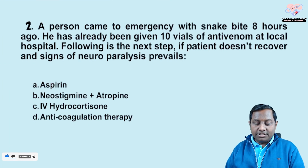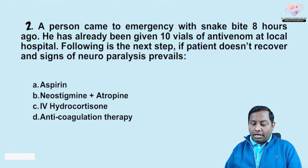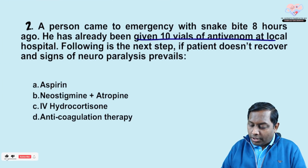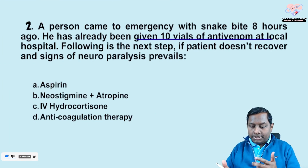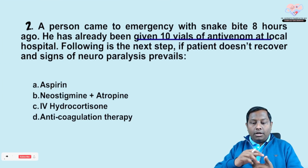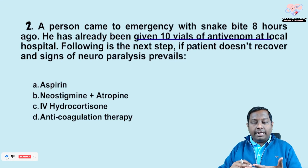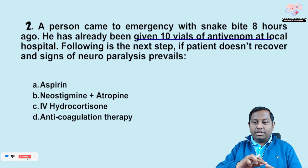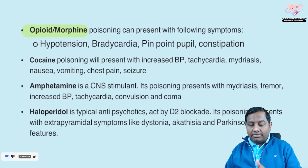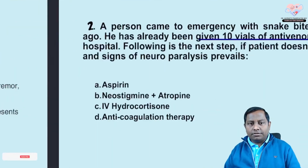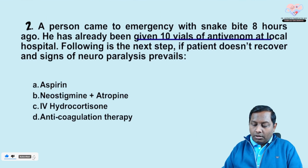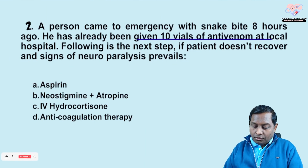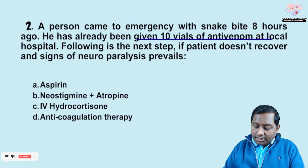Next question: a person comes to the emergency with a snake bite eight hours ago, and has already been given 10 vials of antivenom. Remember, we are also revising important topics — opioid, organophosphate, and atropine poisoning are always asked. Now they are asking about an antivenom case: what is the next step if the patient doesn't recover even after antivenom?